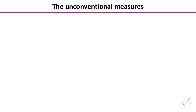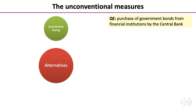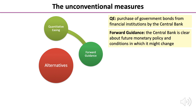So let's have a look in a bit more detail at what these unconventional measures of monetary policy are. We know that there are alternatives to changing the interest rate. In a previous lesson we looked at quantitative easing, which is a purchase of government bonds from financial institutions by the central bank. Another measure is that of forward guidance. This is where the central bank is clear about future monetary policy and the conditions in which it might change. Forward guidance is essentially trying to convert short-term interest rates into longer-term interest rates.